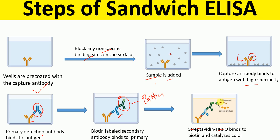After addition of the substrate, a color product is formed. The higher the intensity of the color, the higher the amount of antigen present. The lower the intensity of the color, the lower the amount of antigen present. So the intensity of the color indicates the amount of antigen present in the sample. Thank you.